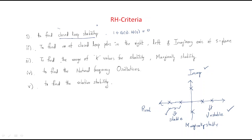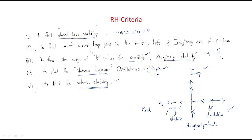The third point is to find the range of K values for stability and marginal stability — we can find K values for both conditions using RH criteria. The fourth point is to find the natural frequency of oscillations, denoted as Omega, which can also be found using RH criteria. The fifth point is to find the relative stability — how much stability is possible.